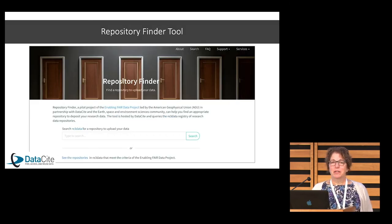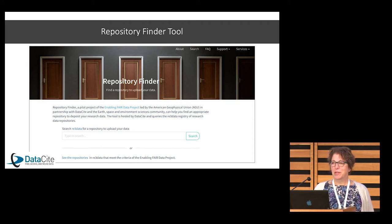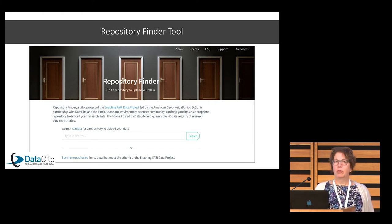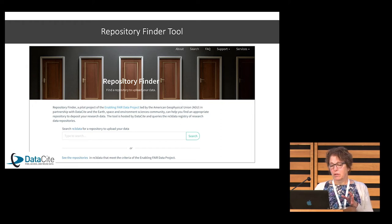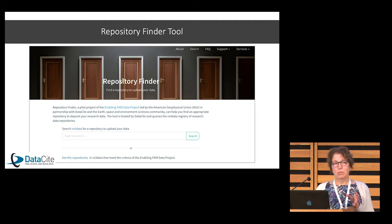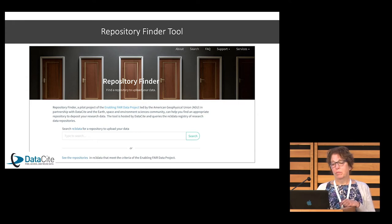The other thing I want to point out is something called the repository finder tool, with funding from the American Geophysical Union, led by Shelly Stahl. We often have researchers who don't know where to put their data, or publishers who don't know where to tell researchers to put their data. The repository finder tool uses very specific criteria for FAIR data so data can be trusted. If publishers don't want to keep up their list of repositories to send researchers to, they can send them to this.